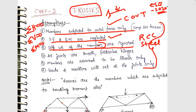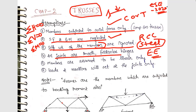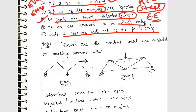Coming to the next assumption: all joints are smooth, frictionless hinges — all joints are always pin joints. Members are assumed to be linear only — no member in a truss should be curved. Loads and reactions will act at the joints only. You can see the load along the truss as well as reactions acting only at the pin joints. This is the most important point related to trusses, covering the basic introduction about trusses.